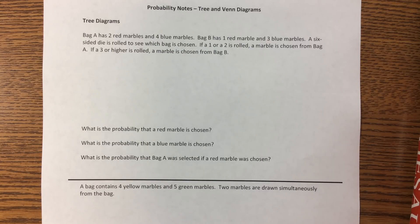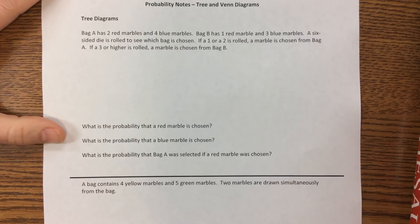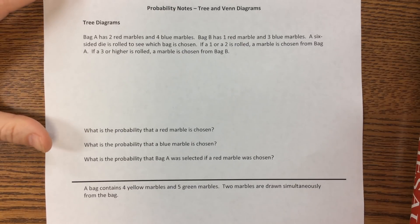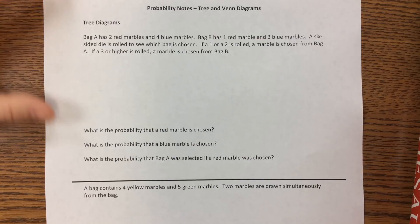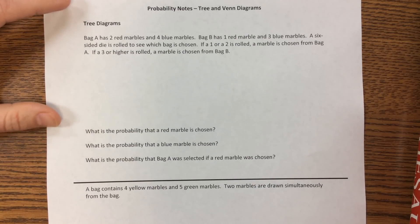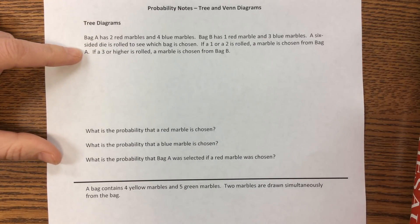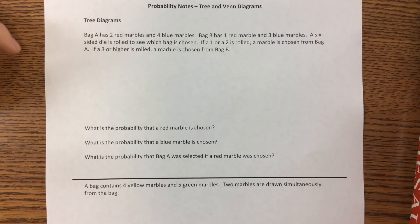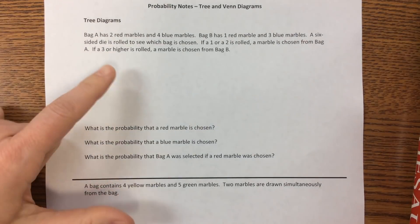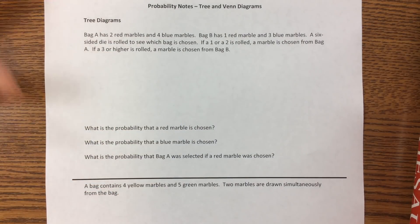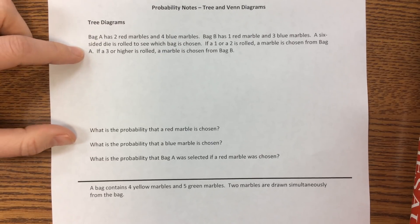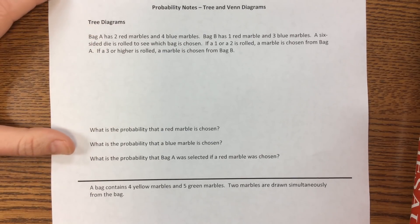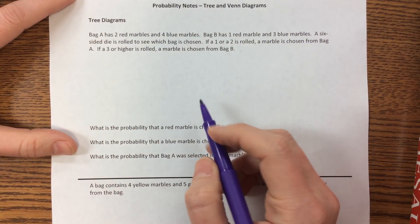In this video we're going to do two examples of tree diagrams that help us understand probability. The first one: bag A has two red marbles and four blue marbles, bag B has one red and three blue. A six-sided die is rolled to see which bag is chosen — if a one or two is rolled the marble is chosen from bag A, if a three or higher is rolled a marble is chosen from bag B.